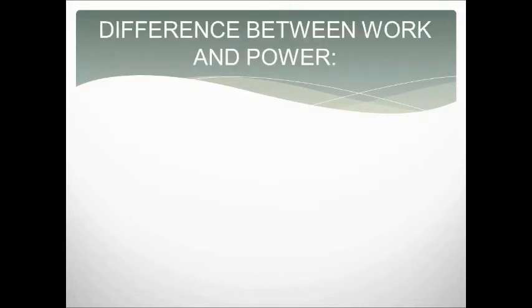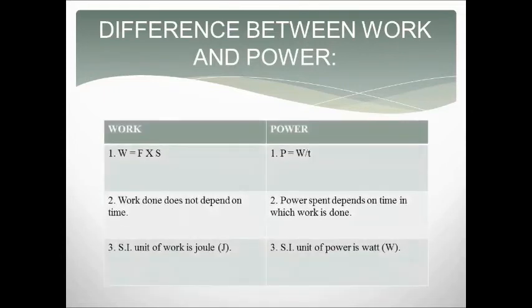Let us understand the difference between work and power. Work done is given by the product of force and displacement. Power is given by work done divided by time taken. If we observe the formulas, work done doesn't depend on time, but power spent depends on the time in which work is done. The SI unit of work is Joule and the SI unit of power is Watt.